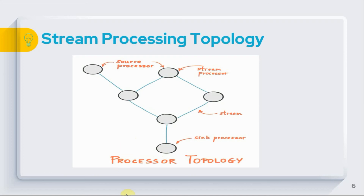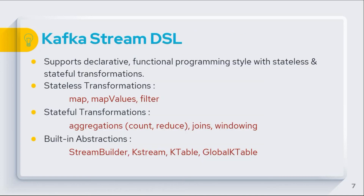Now let's check out what the Kafka Streams library offers to define processor topologies. There are two ways: one is Kafka Streams DSL, which is a domain-specific language, and the second is the lower-level Processor APIs. The Kafka Streams DSL is built on top of the Streams Processor API and supports a declarative functional programming style with stateless and stateful transformations.